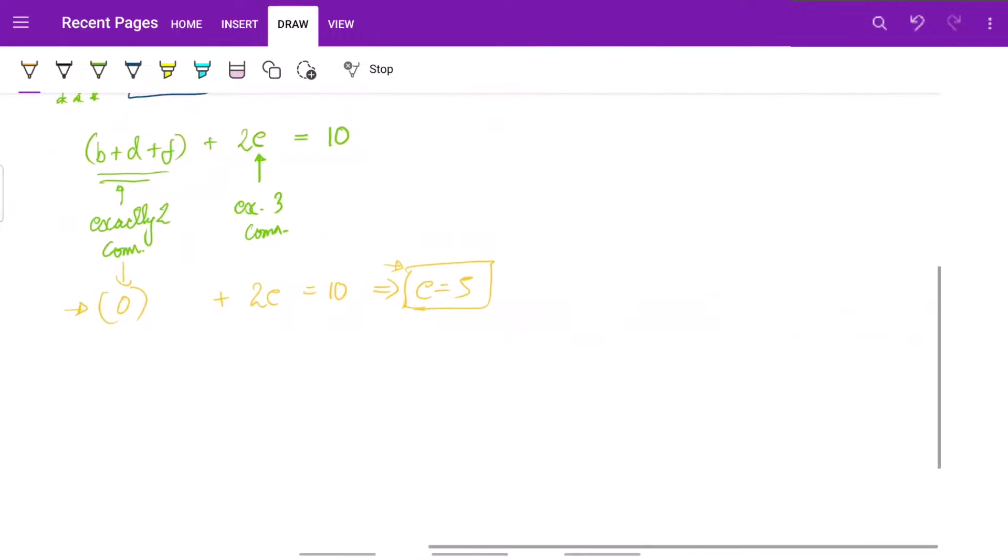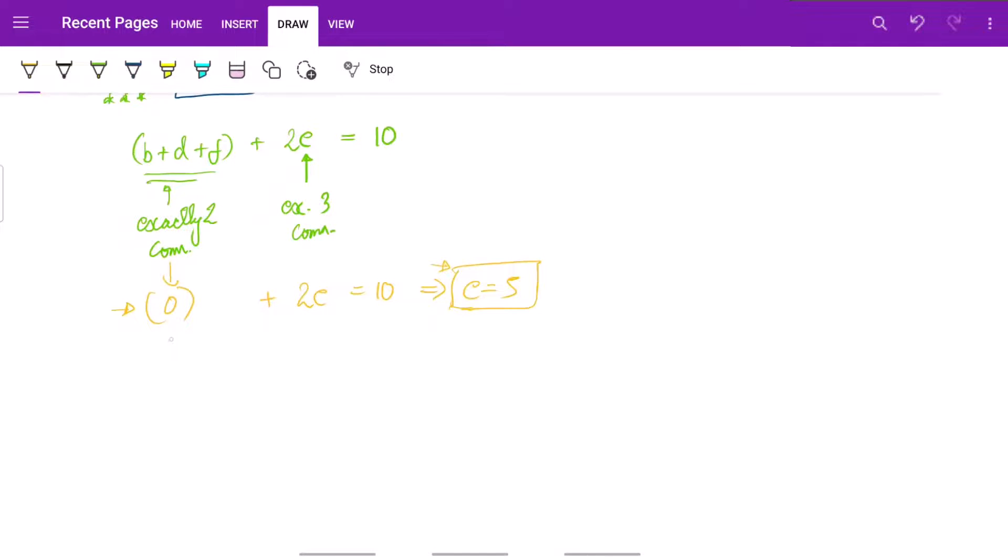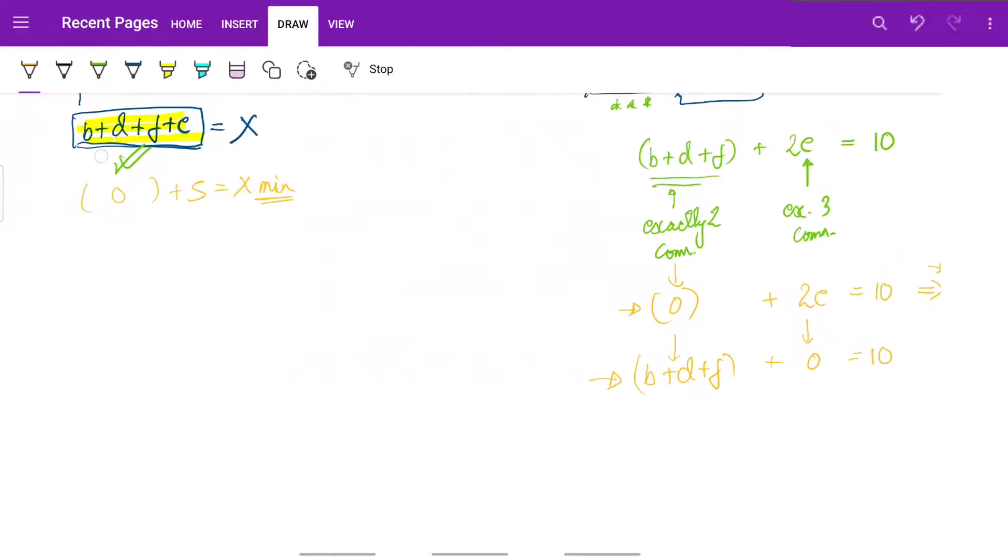Now again we need to maximize x also. In that case what we would do, we would put this value as 0, so b plus d plus f will come out to be 10. Now again when we put back this value here, b plus d plus f as 10 plus e as 0, we get total as 10 and that is our x max.